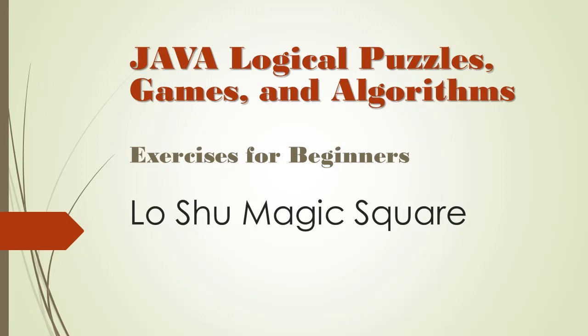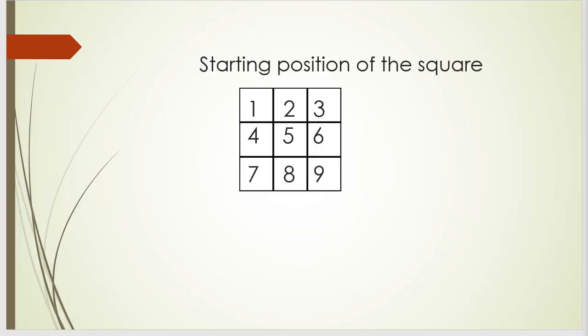In this video we will code a little algorithm that will create a Lo Shu magic square. Let's examine what the Lo Shu magic square is. Everything is based on a 3x3 board. We will start the board by placing numbers 1 through 9 in it in sequential order. We could place the numbers on the board randomly or in any way we want — how we start the board isn't important.